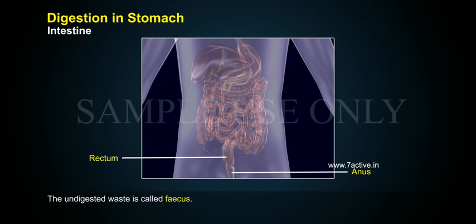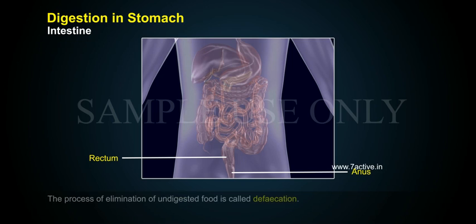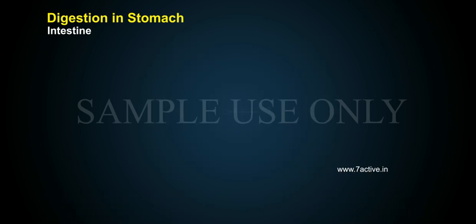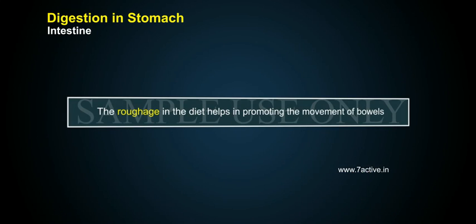The undigested waste is called feces. 5. The process of elimination of undigested food is called defecation. 6. Roughage in the diet helps in promoting the movement of bowels.